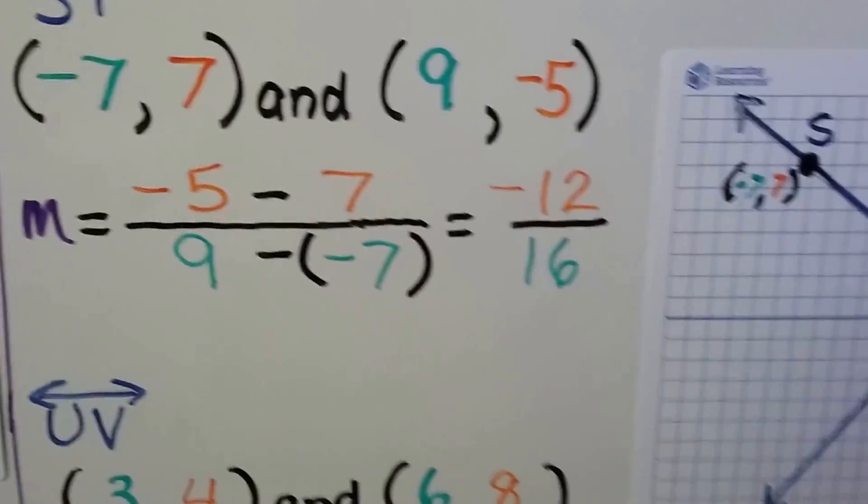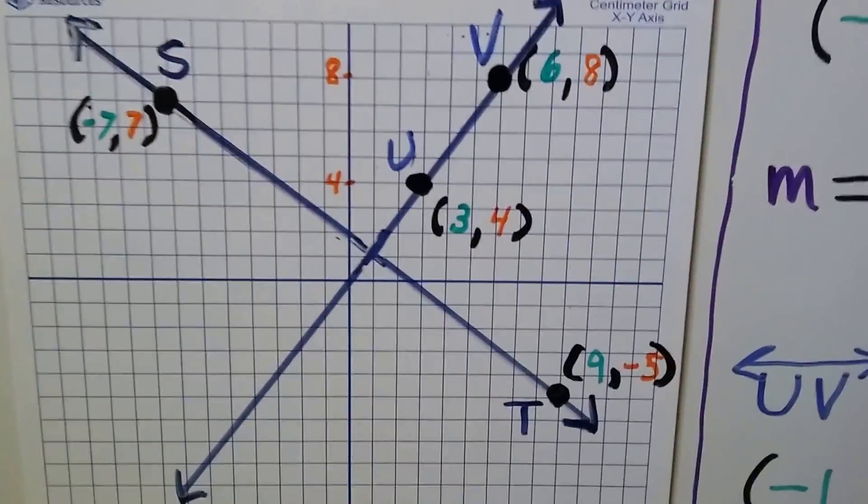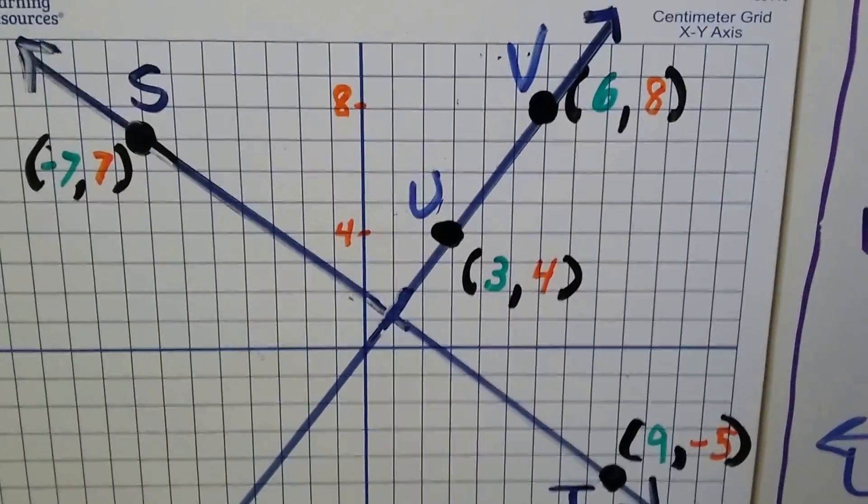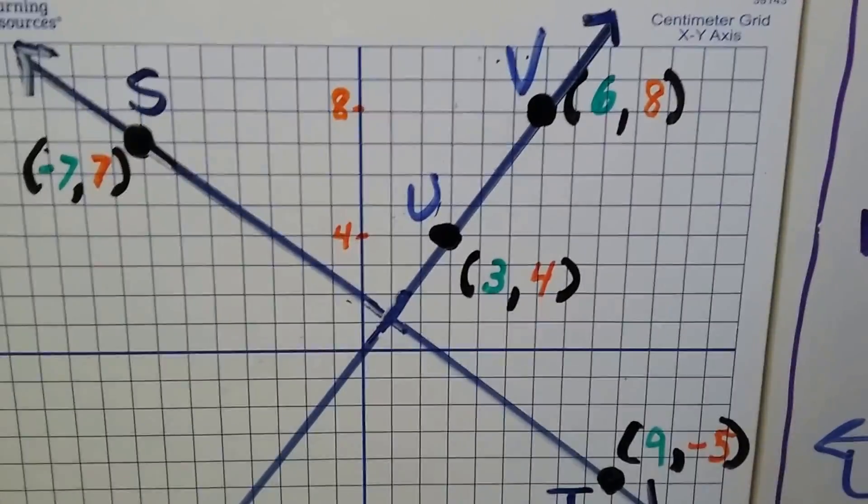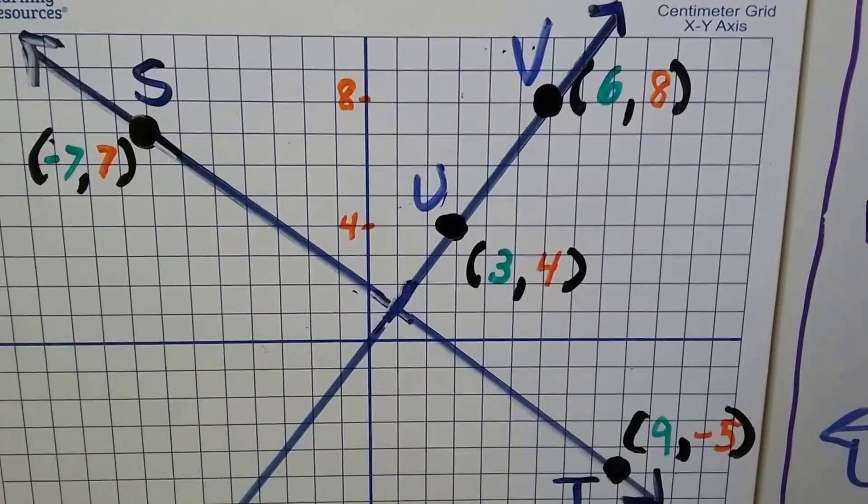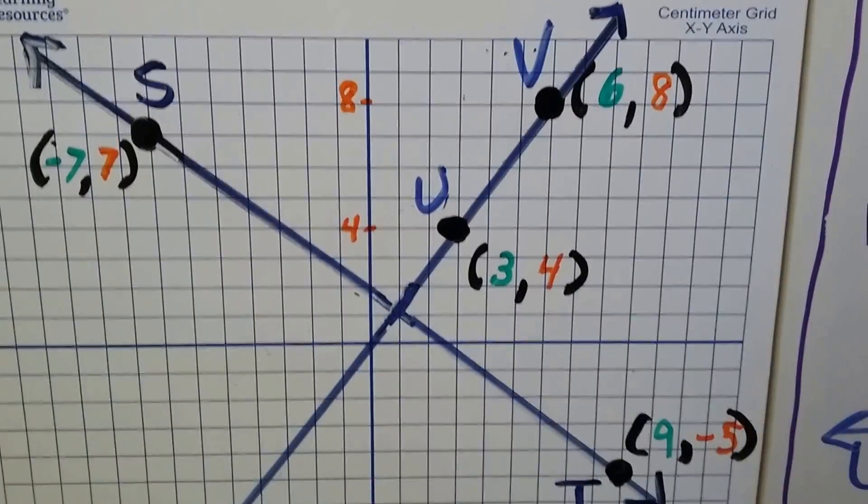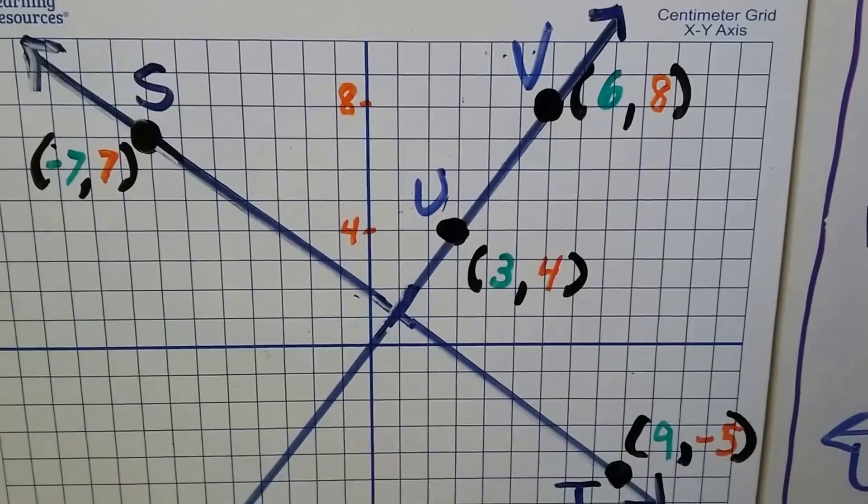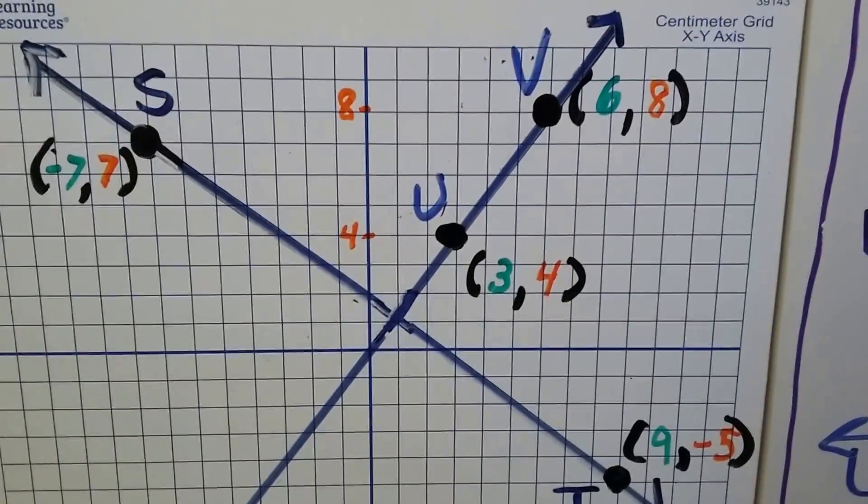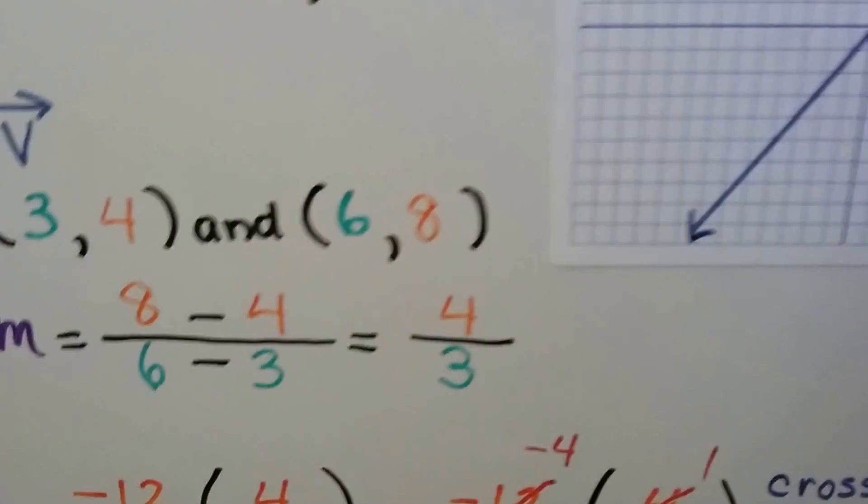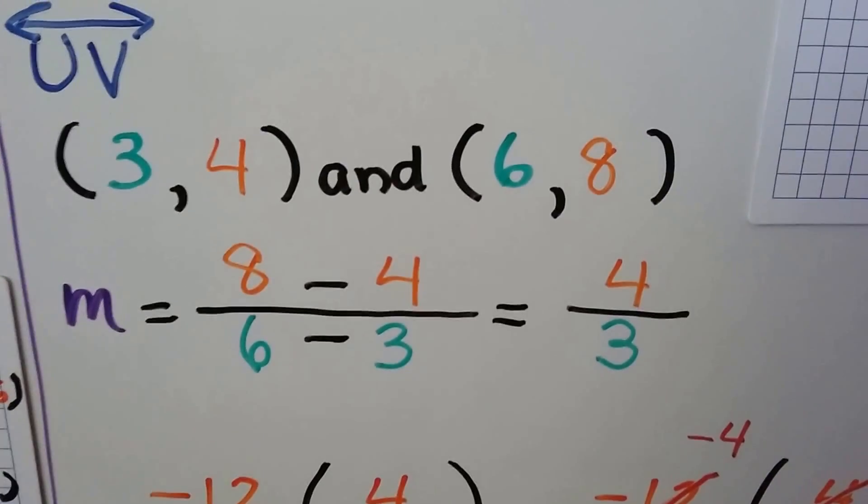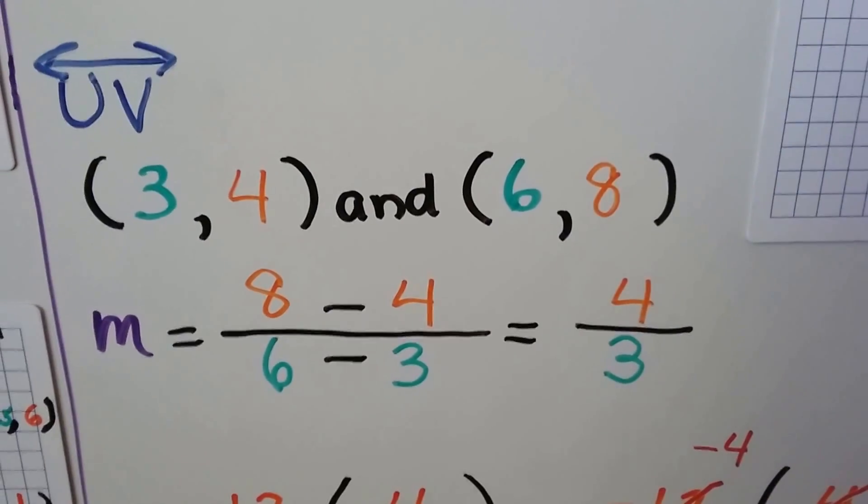For line UV, we have 3 for U for x and 4 for y. For V, we have 6 for x and 8 for y. We go from left to right, so we start with U and then V. U is the first point, V is the second point. So we're going to have 8 - 4 over 6 - 3. 8 - 4 is 4. 6 - 3 is 3. We have a slope of 4/3.